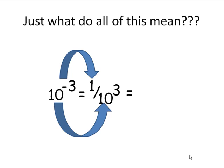In this case, 10 to the negative 3 is 1 in the numerator and 10 to the third in the denominator. And that's the same thing as 1 one-thousandth.